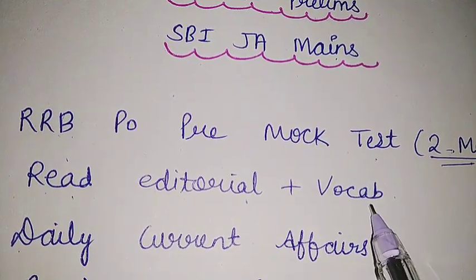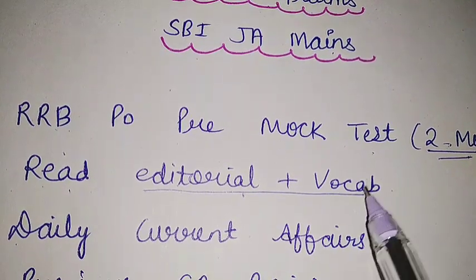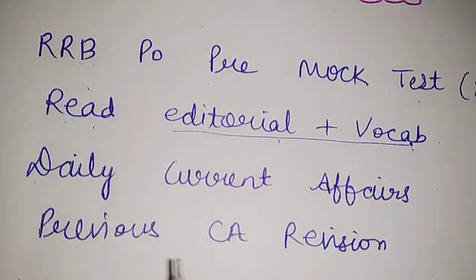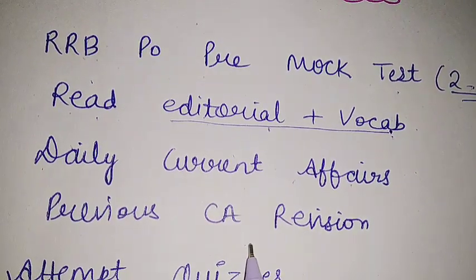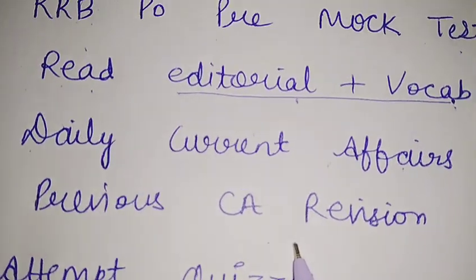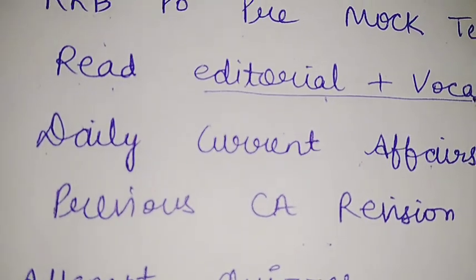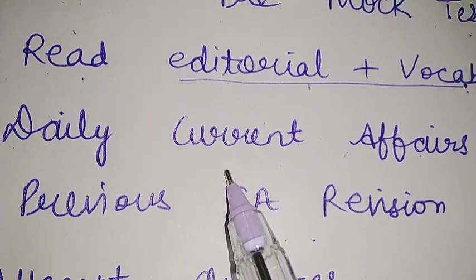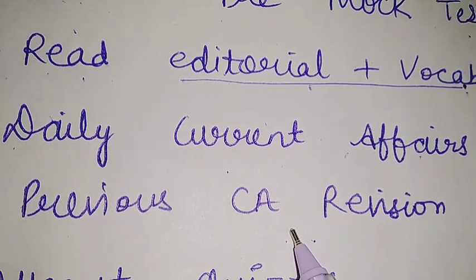Then there is reading of editorial and vocab, which we must do on daily basis. We can't skip it at this time. Then there is daily current affairs and previous current affairs revision for SBI JA Mains. As you know, we have to give the SBI JA Mains and after that there will be RRB PO and Clerk Mains also, so try to focus on current affairs and try to revise the previous current affairs.